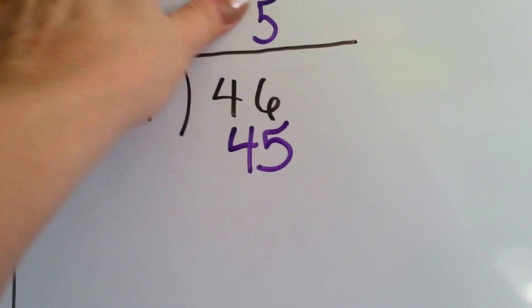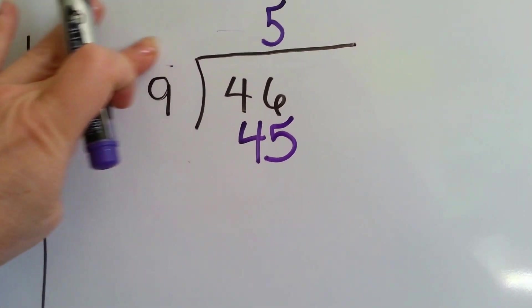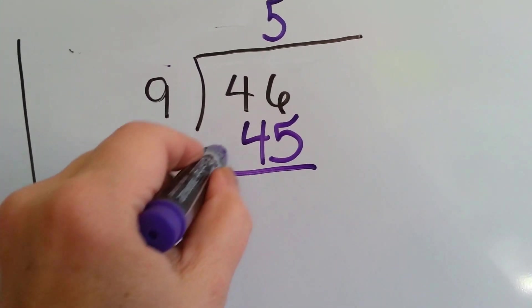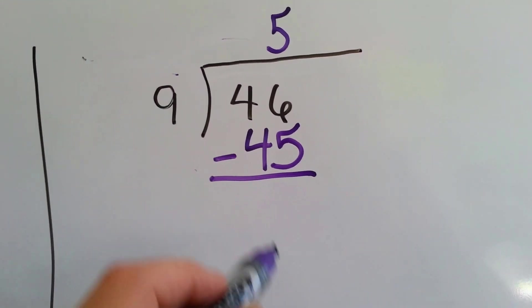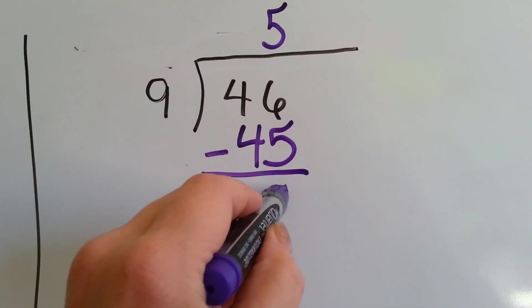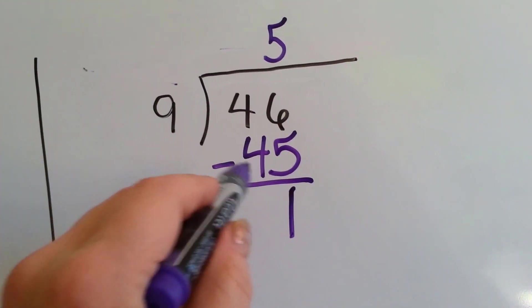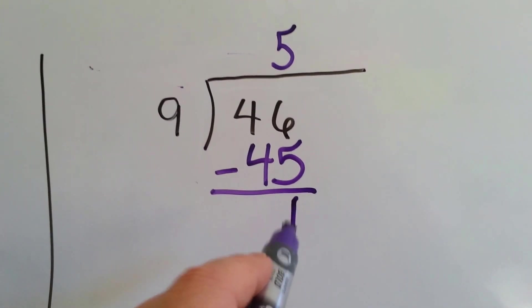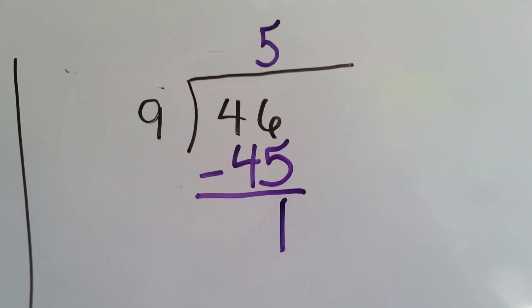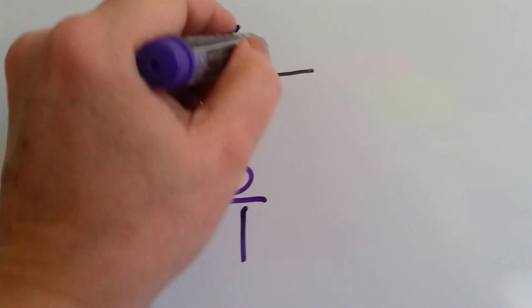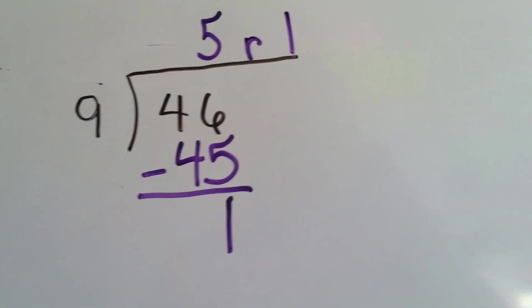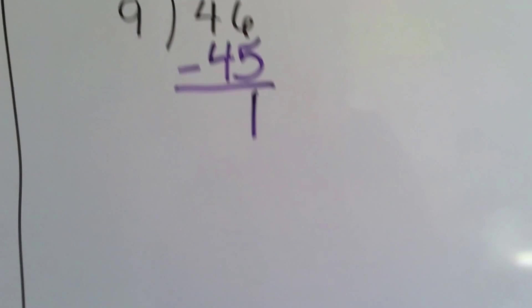Now we subtract. How much is left over? 6 take away 5 is 1. 4 take away 4 is 0. So now we have a 1. Can 9 fit into 1? No. So our remainder is 1. Isn't that easy?